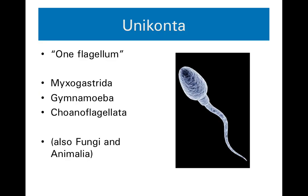This takes us to our fourth and final clade of protists, the Uniconta. Uniconta means one flagellum — not two, not four, not eight, not hundreds or thousands, but just one in the flagellated forms. We've got three phyla of protists to consider, and then two kingdoms that are also part of this clade, Uniconta, including our own: Animalia and Fungi. We are all in this one-flagellated clade, and this particular single-flagellated cell is an animal cell — it's a sperm cell.